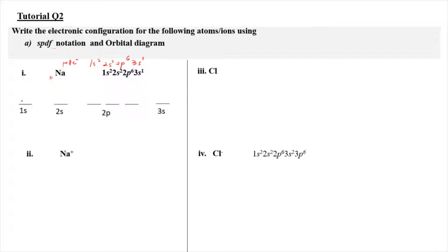We're going to draw the 1s orbital first, filling 1 and 2, then move on to the next energy level 2s, 1 and 2, then move to 2p orbital. According to Hund's rule, we need to fill singly first before pairing. Each electron has a unique set of quantum numbers because it follows the Pauli exclusion principle. And then we have 3s1, so we have one electron there.